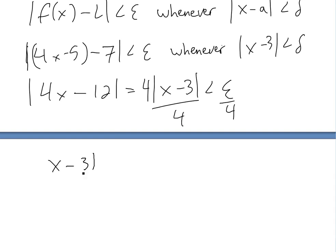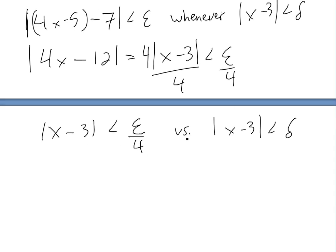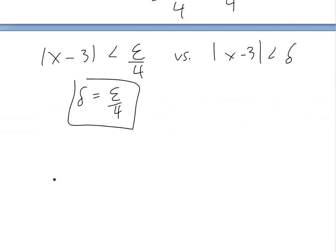So we have four times |x minus 3| less than epsilon, which means |x minus 3| is less than epsilon over four. Comparing this to the condition |x minus 3| less than delta, this suggests that delta is equal to epsilon over four. So now we have this condition, and by the limit definition, we've proved this.